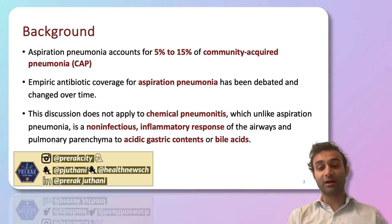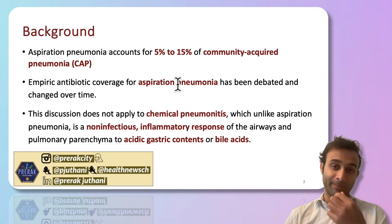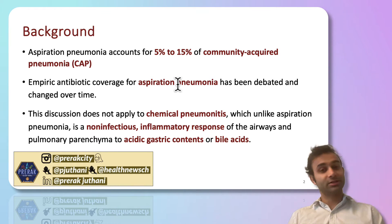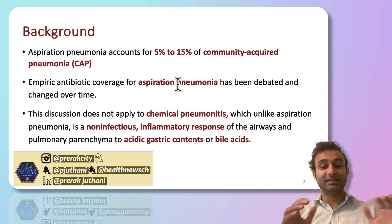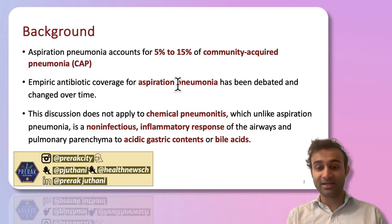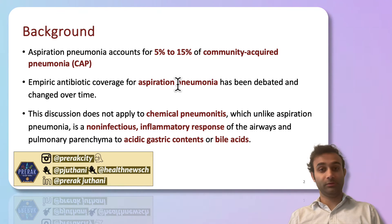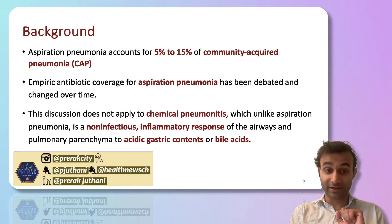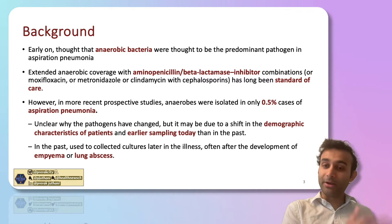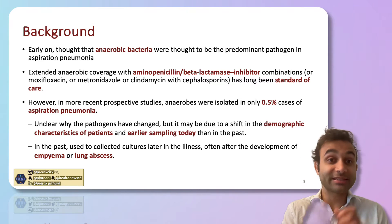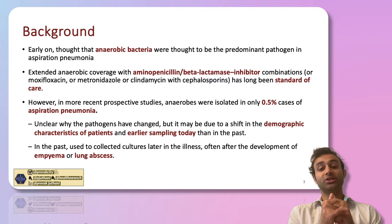The empiric antibiotic coverage for aspiration pneumonia has been debated over time. The thinking was that your mouth contains a lot of anaerobic bacteria — bacteria that survive without oxygen — so it was thought you needed anaerobic coverage. This has actually changed over time. Today's discussion is about aspiration pneumonia, not aspiration pneumonitis, which is just the inflammatory reaction when you aspirate. Aspiration pneumonia implies an actual infection. Early on, anaerobic bacteria were considered the predominant pathogen, so antibiotics covering anaerobes were standard.